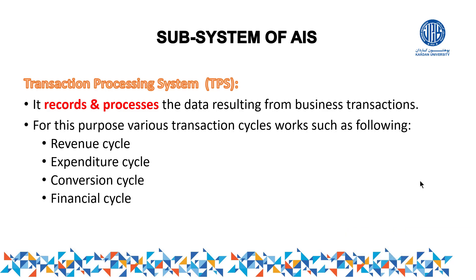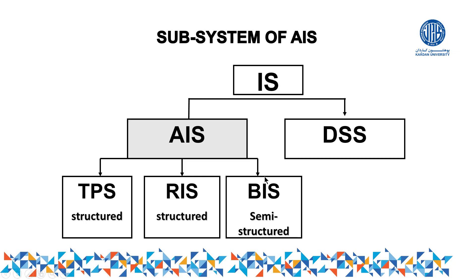Hello dear friends and students. In this video I want to explain the subsystems of AIS. Basically, the AIS itself is divided into three parts: the first part is called TPS, the second part is called RIS, and the next part is called BIS.